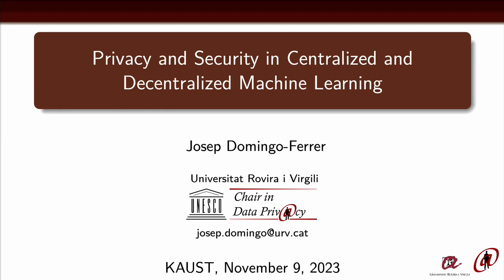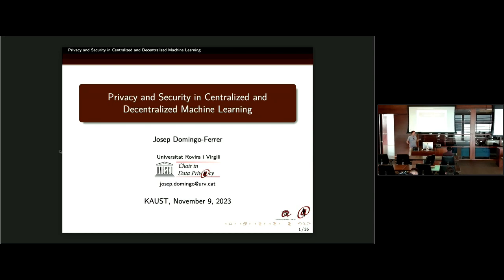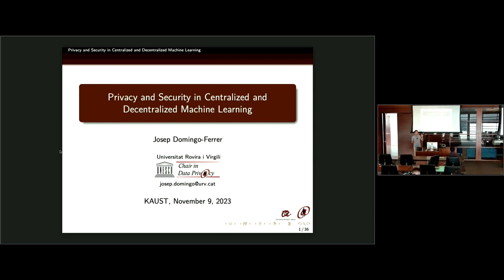Nice to be here, and I'm grateful to Roberto for the invitation, and also to Paolo, who I have known for several years — old friends, I would say. What I will do today is talk about some of the things we do in my group related to machine learning. Normally we deal with privacy and security, the interplay between privacy and security and other requirements about ethics like fairness, explainability, and these kinds of things. But this talk is about the interplay in the case of machine learning.